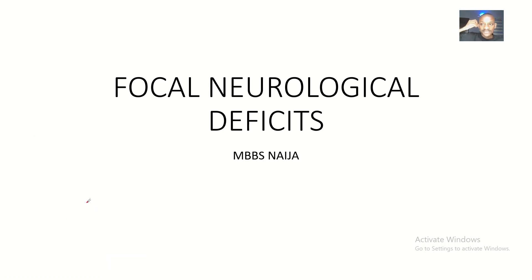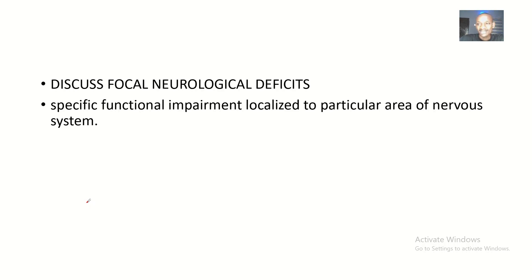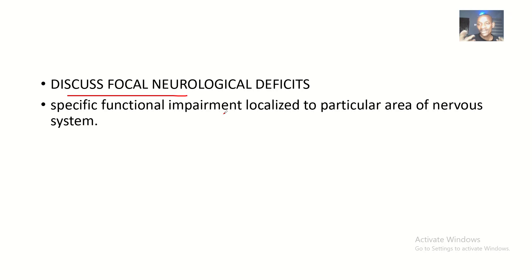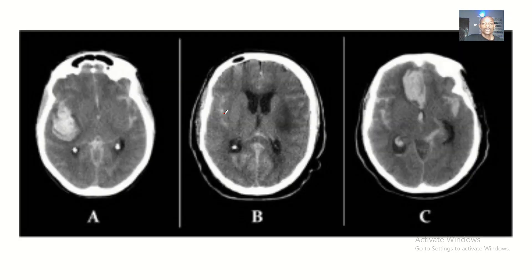I'll be looking at focal neurological deficits. Focal neurological deficits are basically problems that are specific to one part of the brain — problems that are affecting one specific area. Our focus is to discuss focal neurological deficits: if there's something affecting one part of the brain, how will it actually present? This is specific functional impairment localized to a particular area of the nervous system.